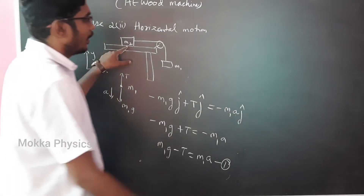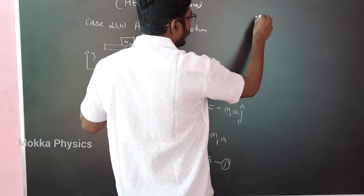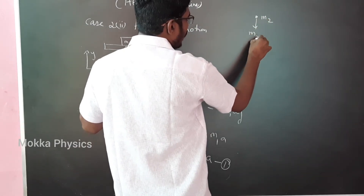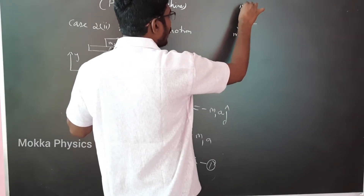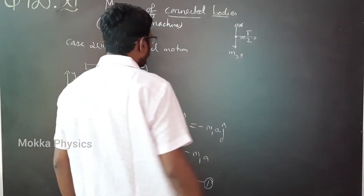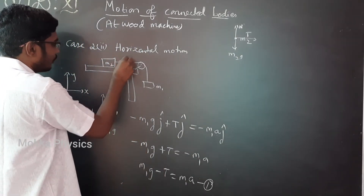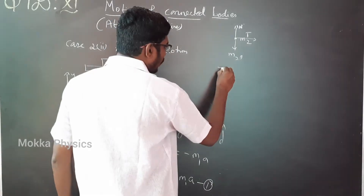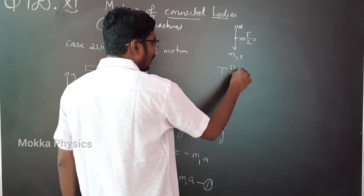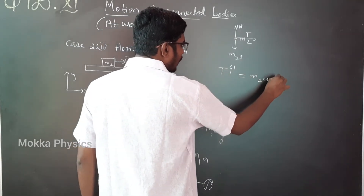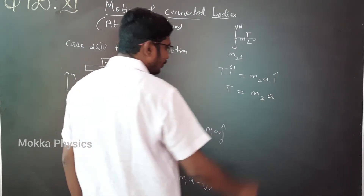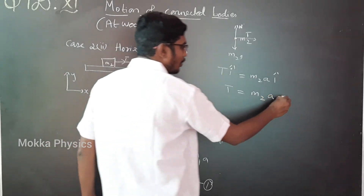Now for m2 on the table: there is only one force acting, which is tension on the string, in the i-direction. So in the i-component: T equal to m2a. This is equation number two.